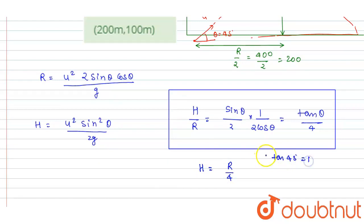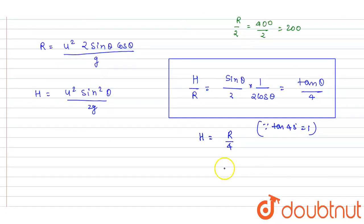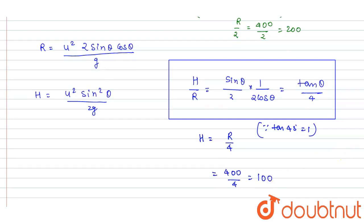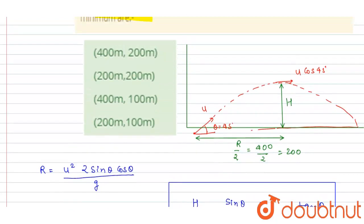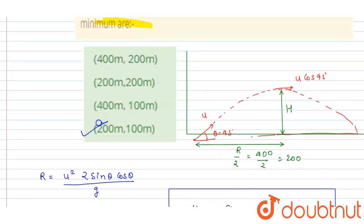Since tan 45 is 1, R is 400, so R by 4 is 100. And this is the y-coordinate and this is the x-coordinate. So 200 comma 100, that is option D. So D is the correct one.